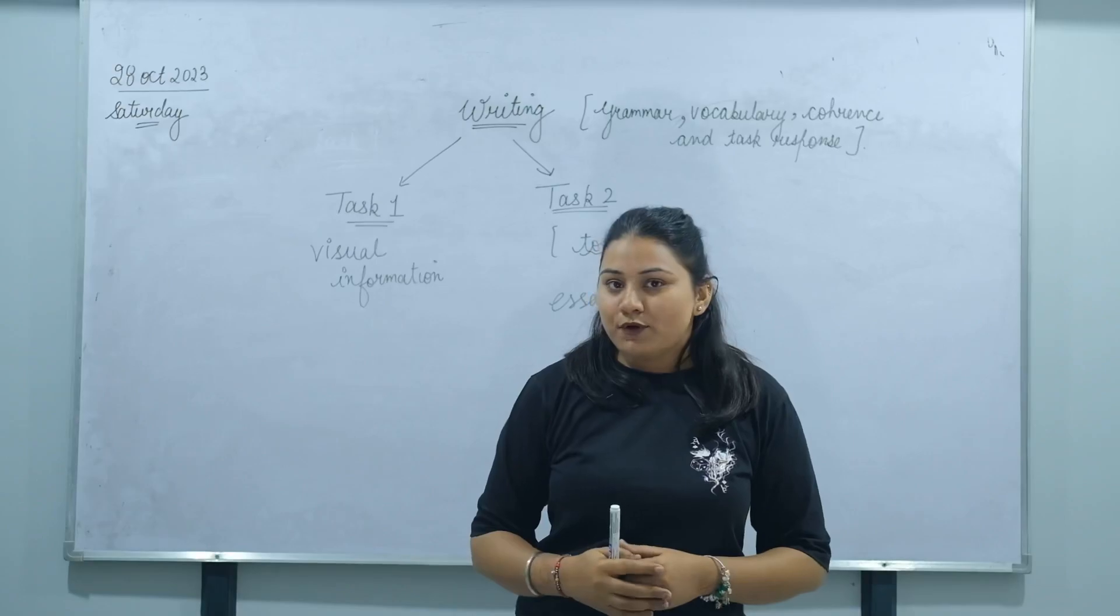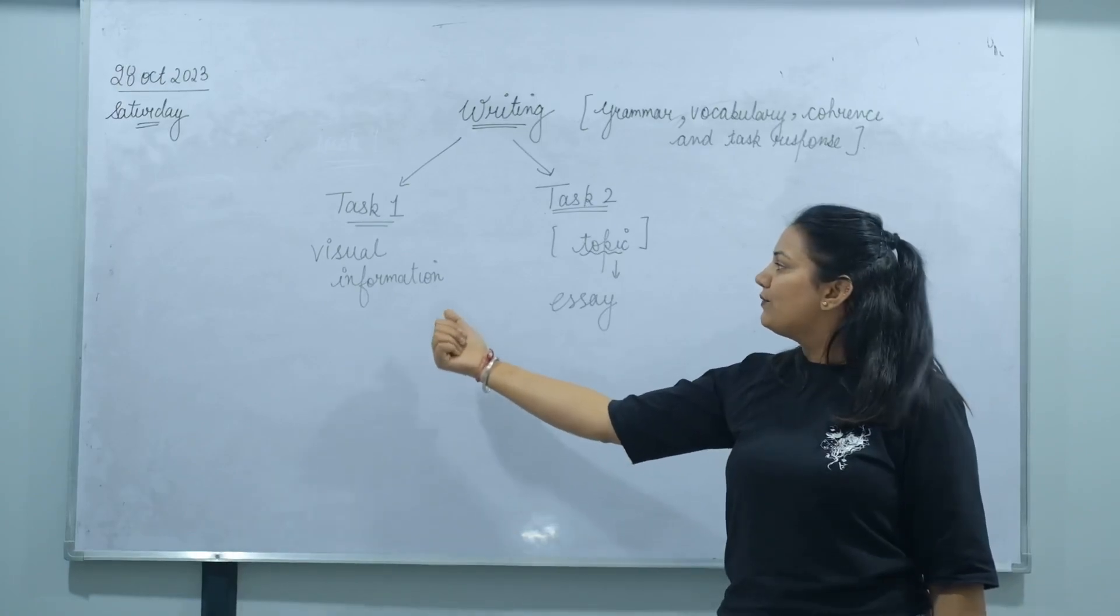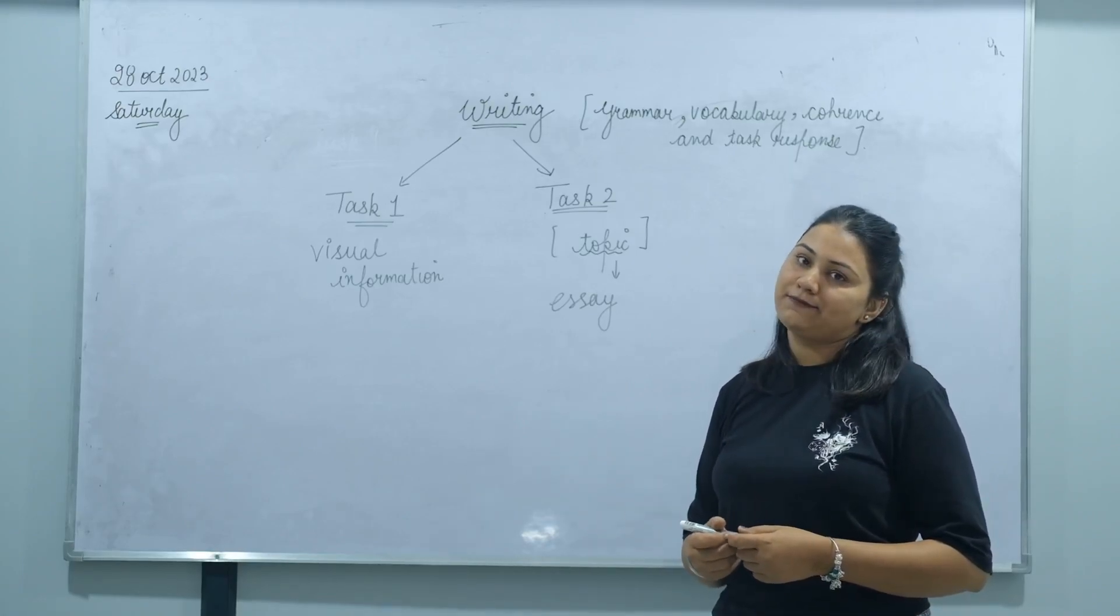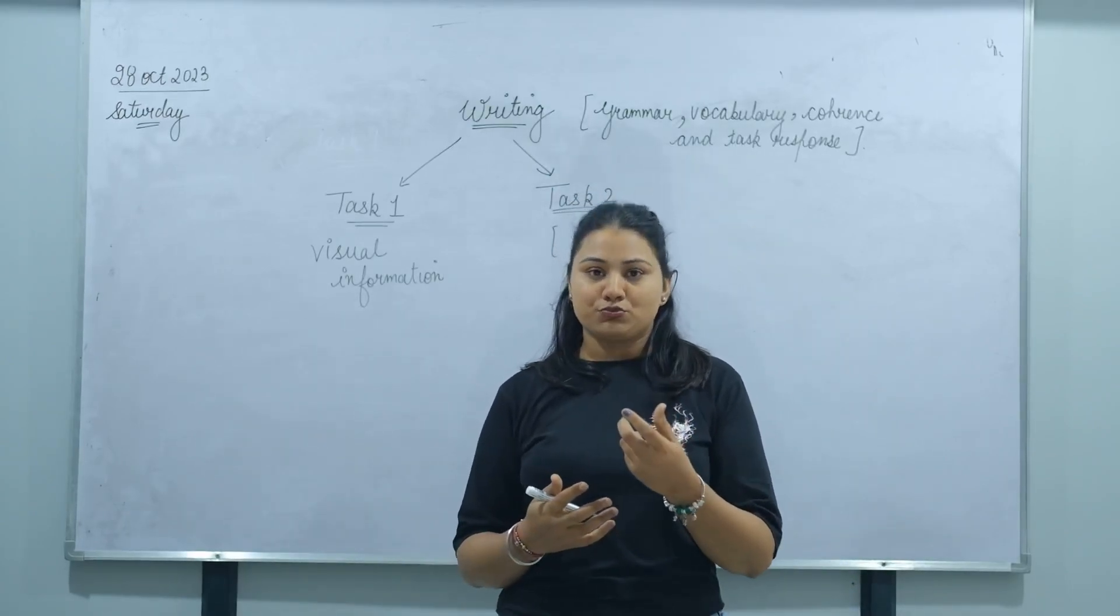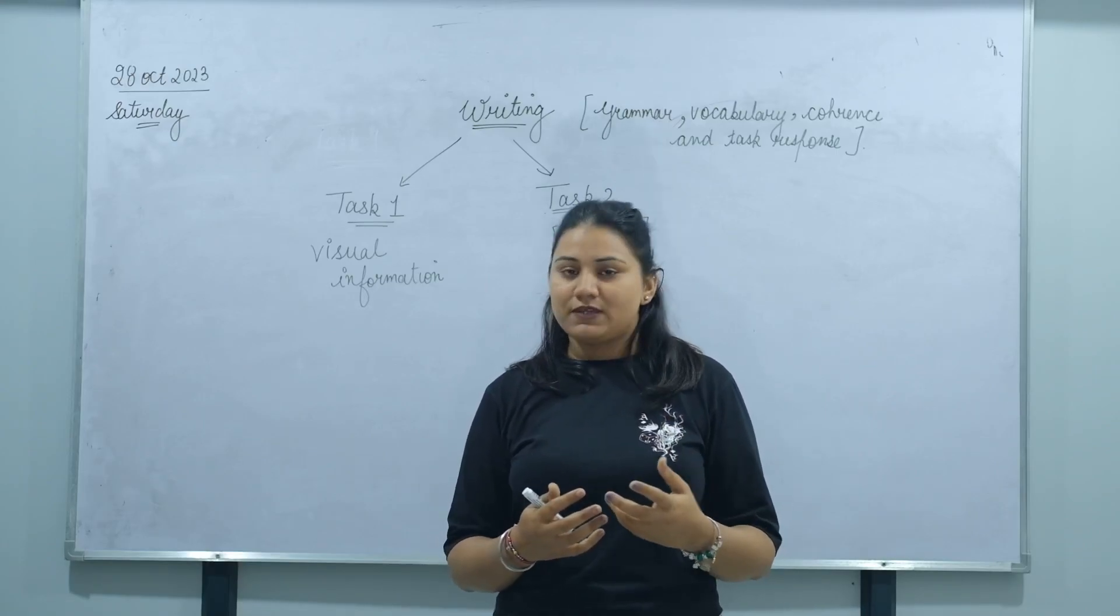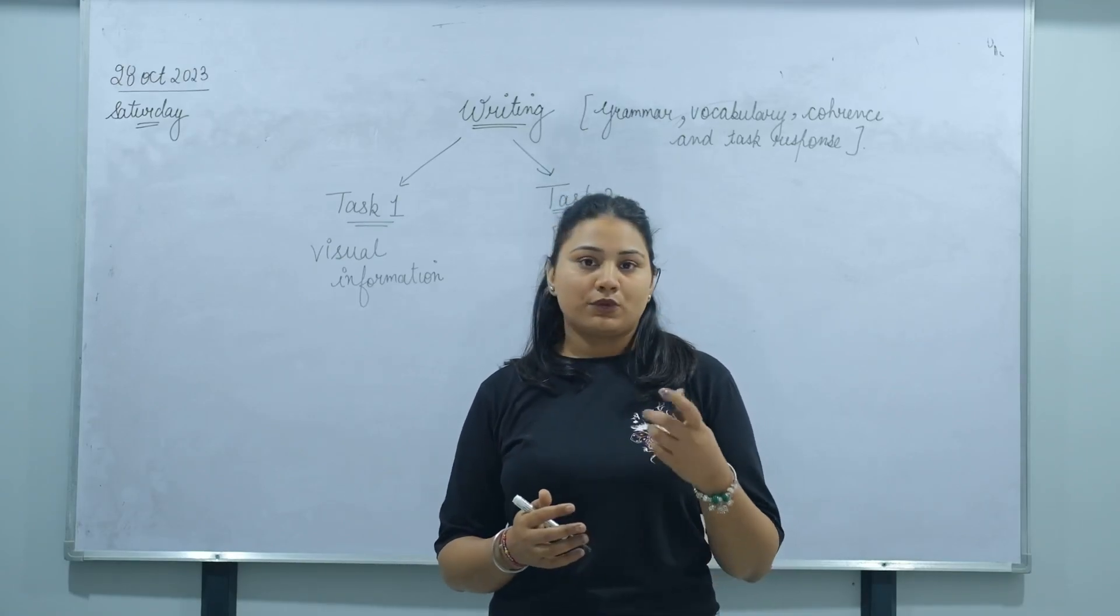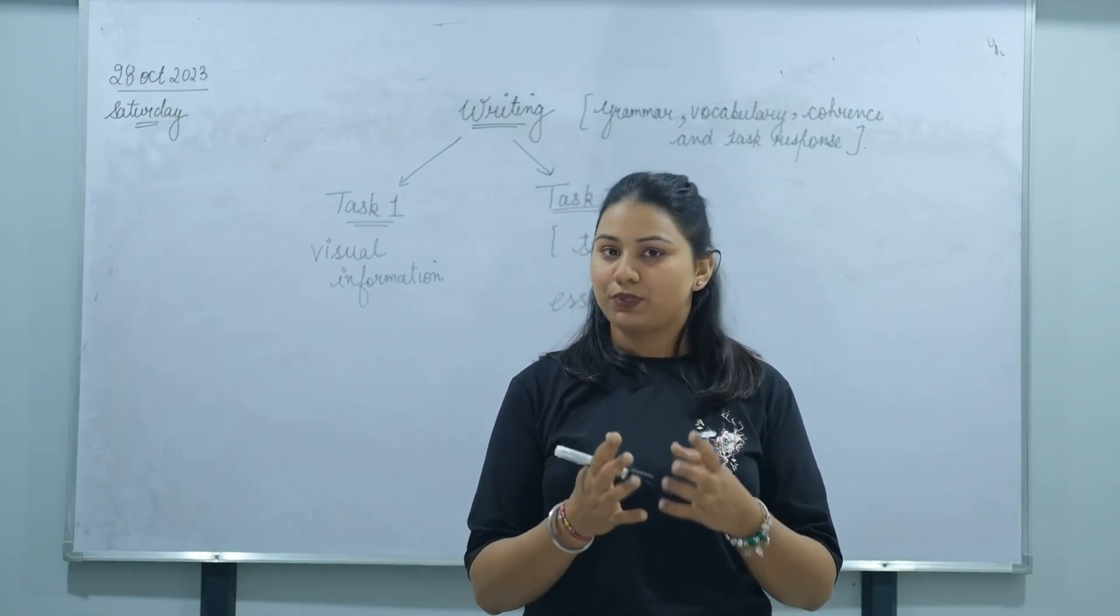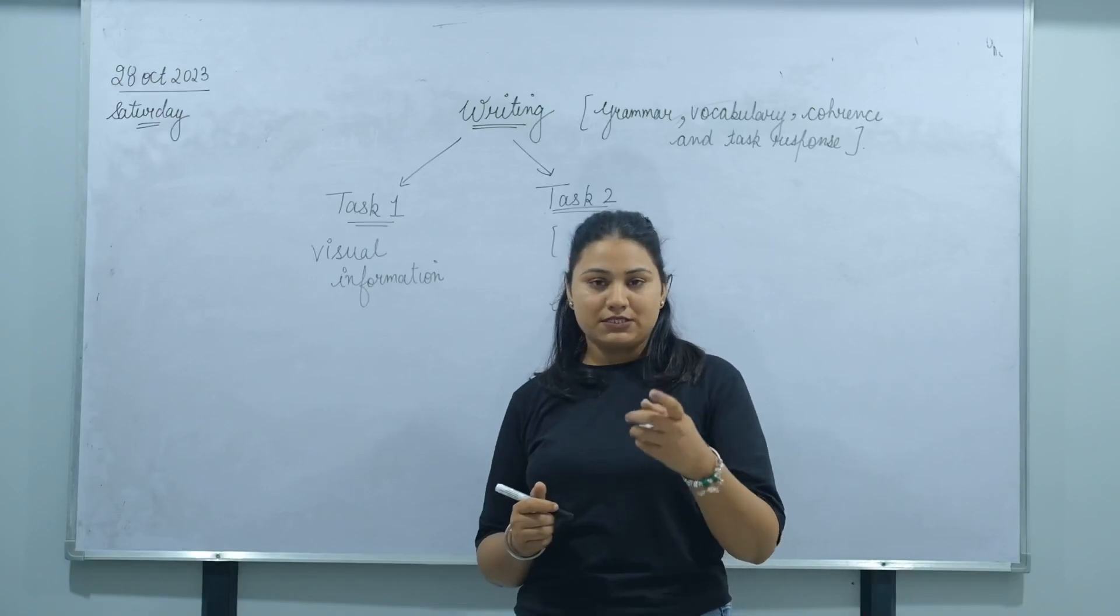There are two types of writing: task 1 and task 2. Writing task 1 is visual information and writing task 2 is related to a particular topic that you have to write in an essay form. Some students have problems related to making ideas for organizing the body paragraphs. So you can use PEEP or PEER method.